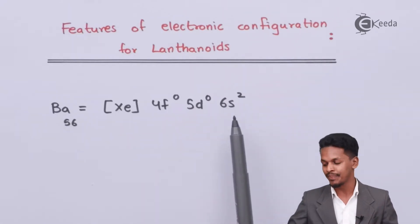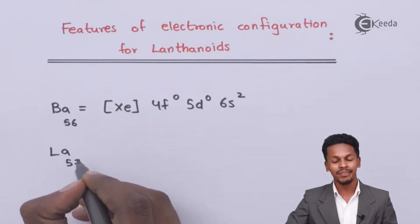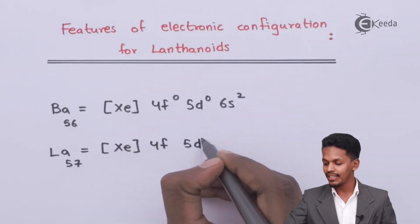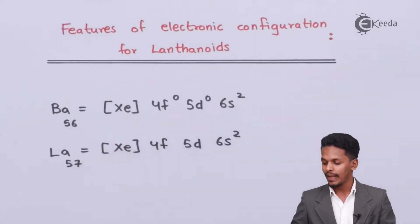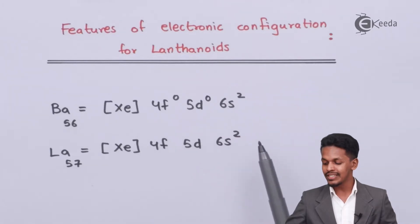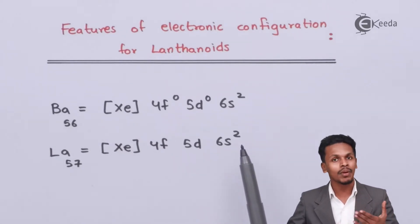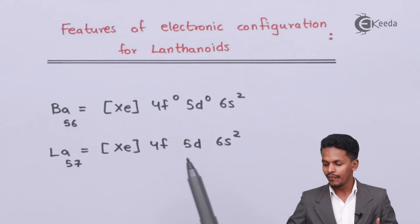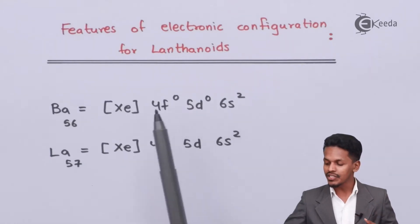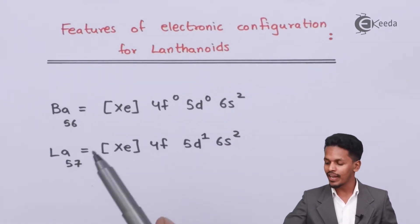Moving to lanthanum, which has atomic number 57, its electronic configuration is [Xe] 4f⁰ 5d¹ 6s². It is similar to barium but with one additional electron. Importantly, that extra electron does not enter the 4f orbital — it enters the 5d orbital, leaving the 4f orbital empty.